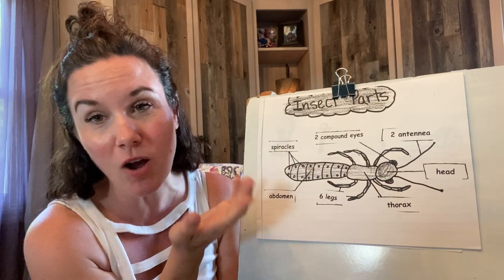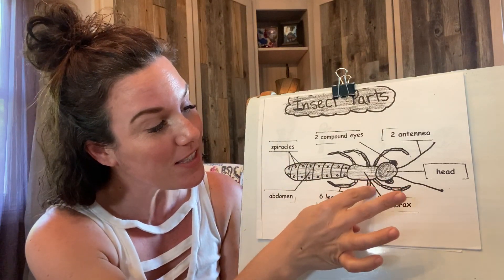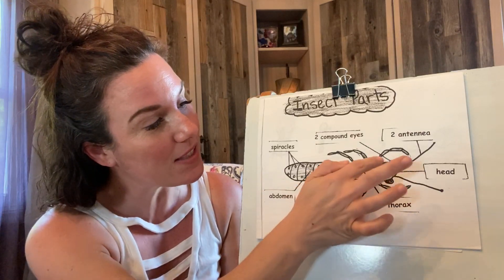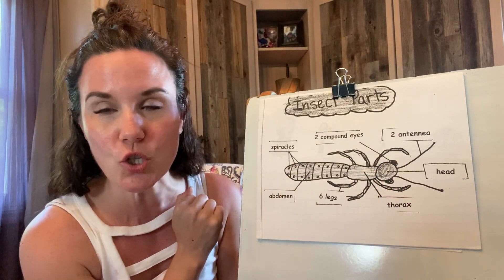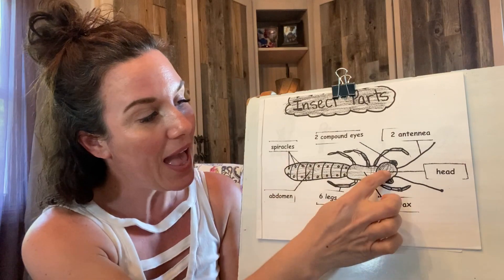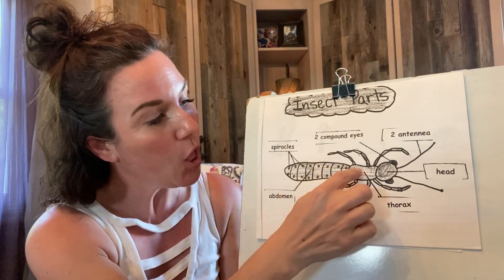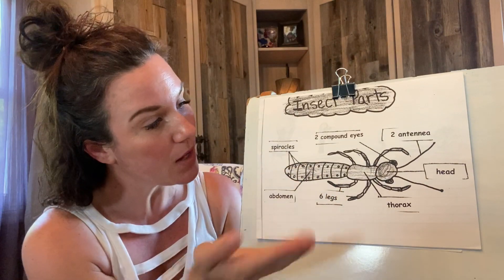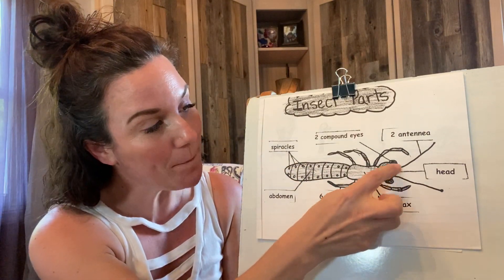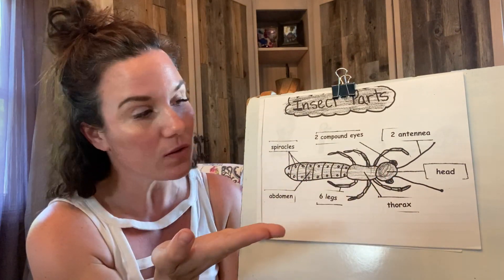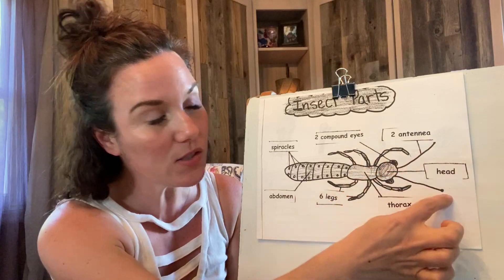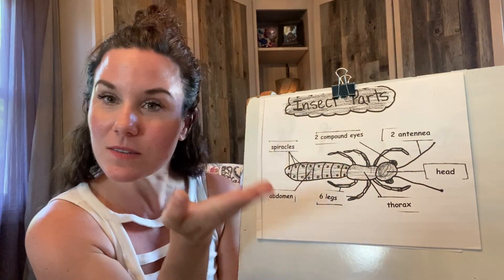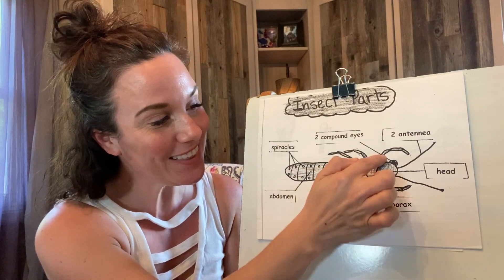And that song always leaves out the six legs. All insects have six legs too. My turn, your turn. Let's say all the body parts. Head, thorax, abdomen. Compound eyes, antennas, spiracles. Six legs.